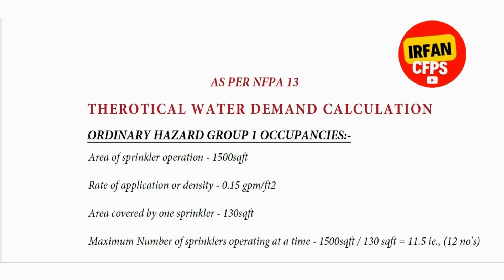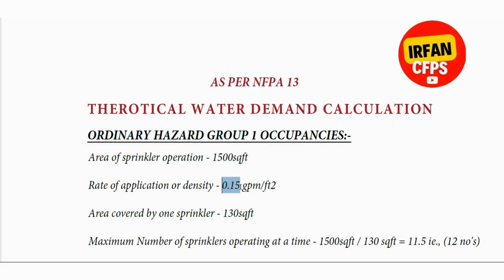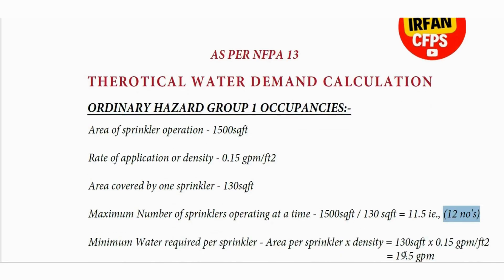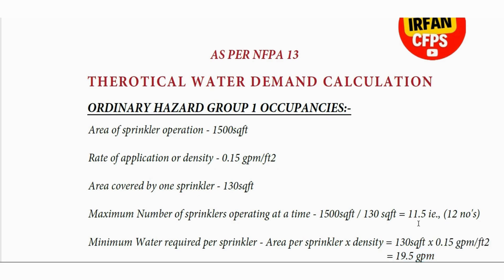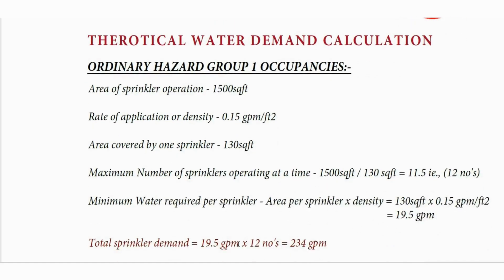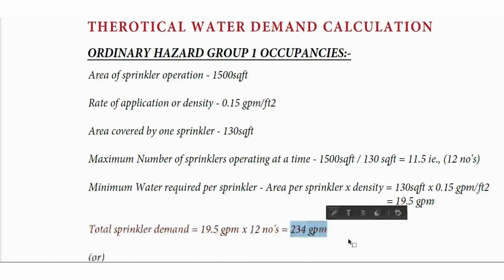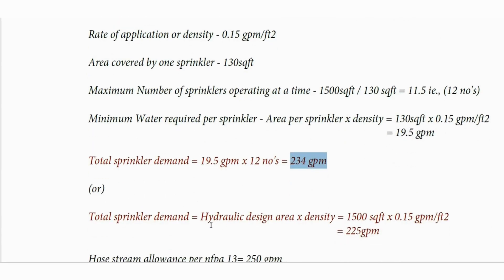Similarly, we calculate the theoretical water demand for ordinary hazard group 1 occupancies. For NFPA 13, the area covered by one sprinkler for ordinary hazard group 1 or group 2 is 130 square feet. The maximum number of sprinklers will be 12, and the minimum flow required from one sprinkler is 19.5 GPM for ordinary hazard group 1. The total sprinkler demand will be 234 GPM.